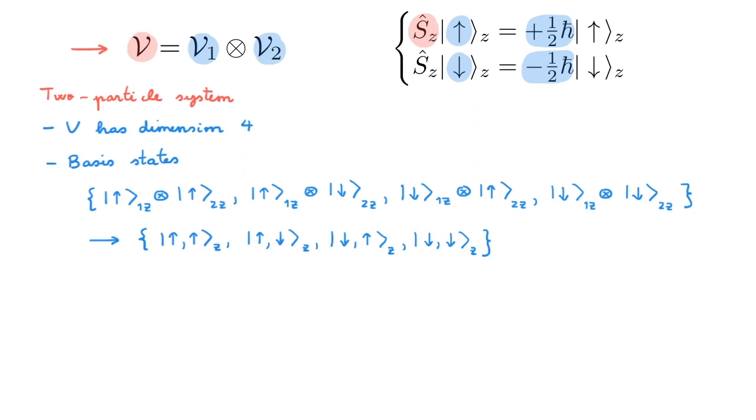Similarly, the Sz operators acting in individual state spaces are now promoted to operators acting in V like this and for simplicity we typically write them like this, omitting the identity operator and the tensor product sign.